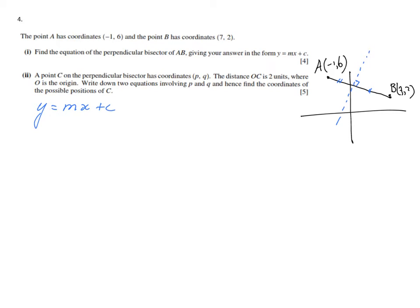Let's find the gradient first. Gradient of AB. That is the difference in the Y direction over the difference in the X direction. 6 minus 2 over (-1 minus 7). So Y1 minus Y2 over X1 minus X2. And that is 4 over -8, so that's minus a half. Negative half.